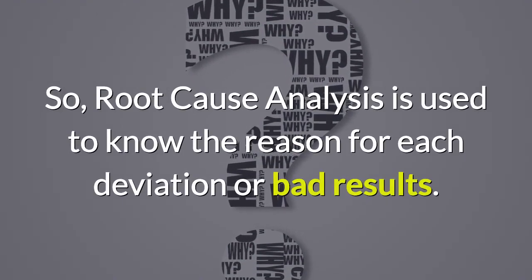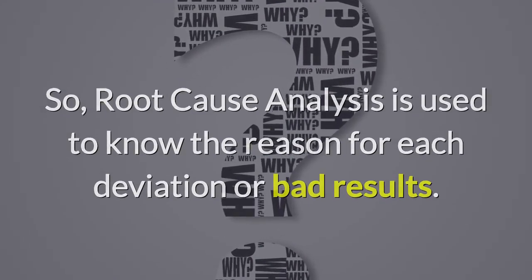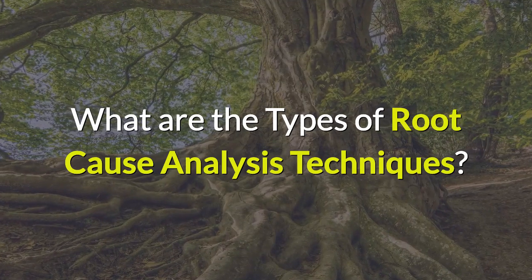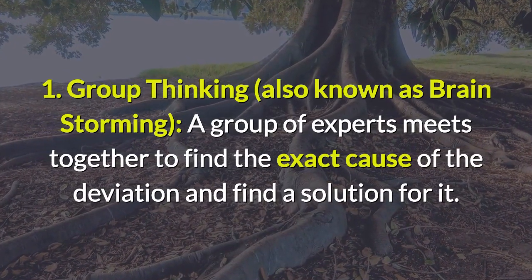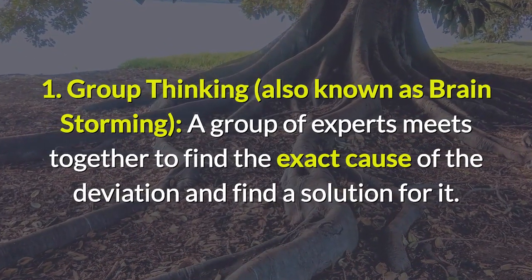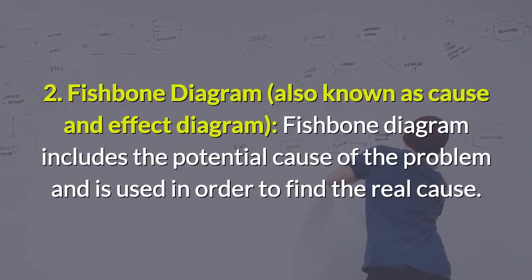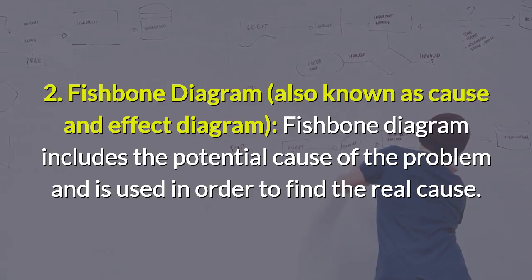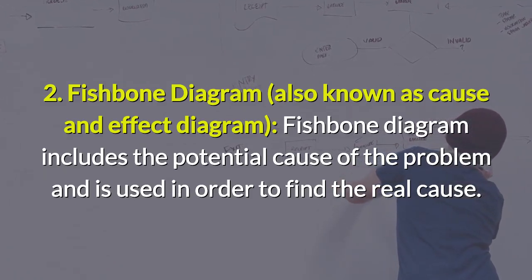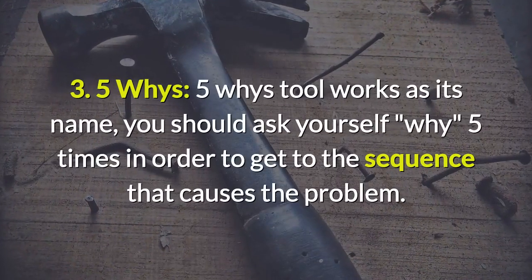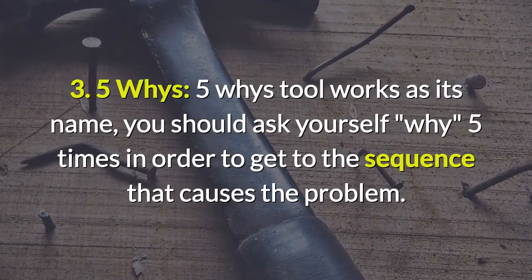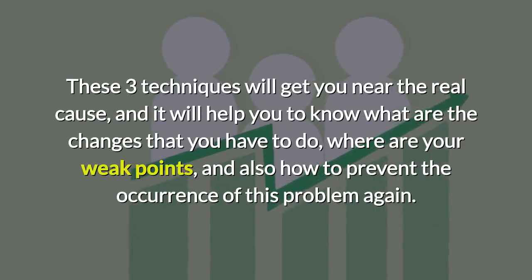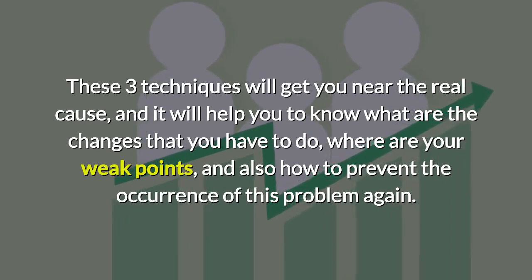Root cause analysis is used to know the reason for each deviation or bad result. There are three types of root cause analysis techniques. One: group thinking, also known as brainstorming — a group of experts meets together to find the exact cause of the deviation and find a solution. Two: fishbone diagram, also known as cause and effect diagram — it includes the potential causes of the problem to find the real cause. Three: five whys — you ask yourself 'why' five times in order to get to the sequence that causes the problem. These three techniques help you identify weak points and know what changes need to be made.